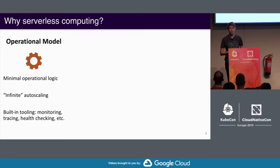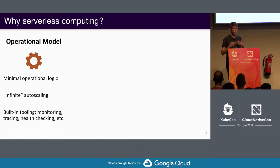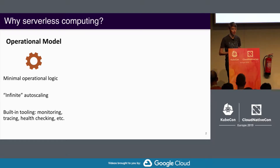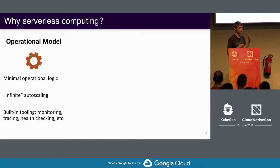One is the operational model. Basically, as a user you defer so much of your operational logic to the cloud provider. You should only need to focus on your actual business logic — the actual code that you care about. All other things should be deferred as much as possible to the cloud provider, and in return you get a lot of things for free: the cloud provider does the auto-scaling for you, and other things you get for free include monitoring, health checking, and all that sort.